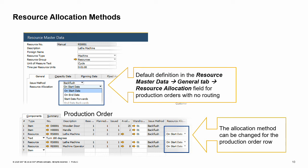End date backwards: this method is similar to the previous one, but instead of allocating from the start date forward, allocation is performed starting from the end date backwards. For production orders with no routing, we can set the default resource allocation method for each resource. However, we can also change the allocation method in each row of the production order.